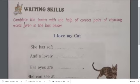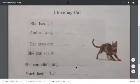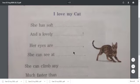Here we have a poem, 'I Love My Cat,' and nearby the help words, the rhyming words. Now I am going to complete this poem with the help of these words.